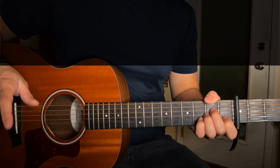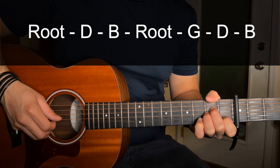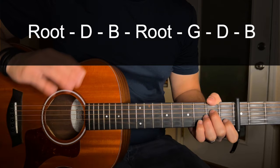The picking pattern you're going to use for each of these chords is going to be the root note, D, B, root note, G, D, B. And you're just going to repeat that picking pattern for each chord throughout the entire song.